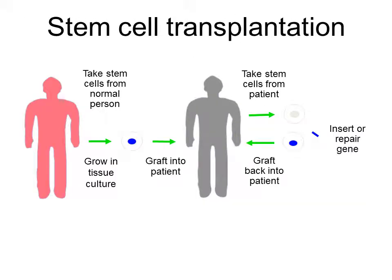This cartoon shows the possible stem cell transplantation approaches. We could take a stem cell from a normal person, expand it in tissue culture, and then transplant it into a patient. The problem is that these cells might be immunologically rejected by the patient, so they'd have to be immunosuppressed, probably lifelong. The other idea is to take the patient's own stem cells, insert a normal gene or repair the defective gene, grow these cells up and transplant them back into the patient — though actually doing the genetic manipulation is quite a complicated process.